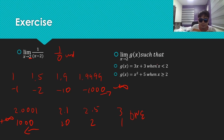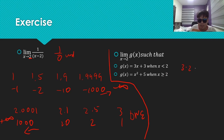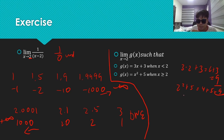How about this one? The limit of g of x as x goes to 2, where g of x equals 3x plus 3 when x is less than 2, and g of x equals x squared plus 5 when x is greater than or equal to 2. Substituting from the left: 3 times 2 plus 3 equals 6 plus 3, which is 9. From the right: 2 squared plus 5 equals 4 plus 5, which equals 9. The left and the right agree on where it goes, which is 9. So we can say the limit is equal to 9. It exists because both sides agree.